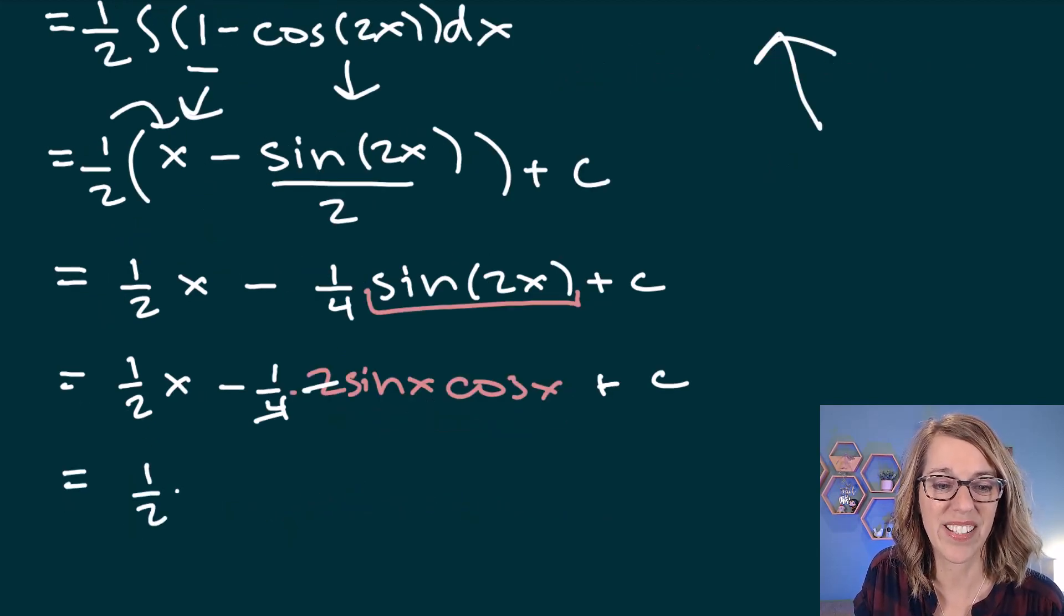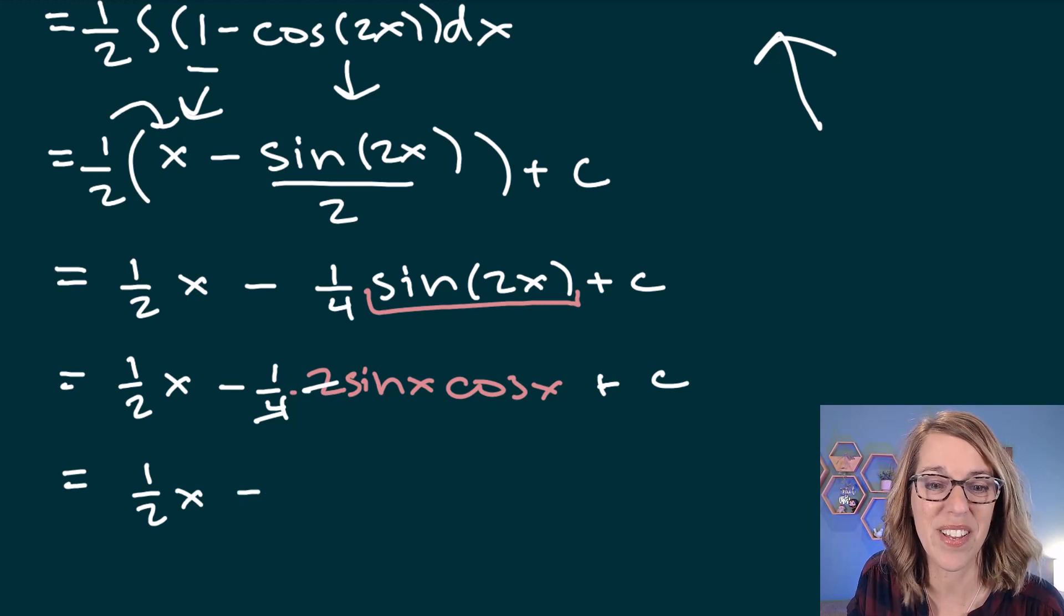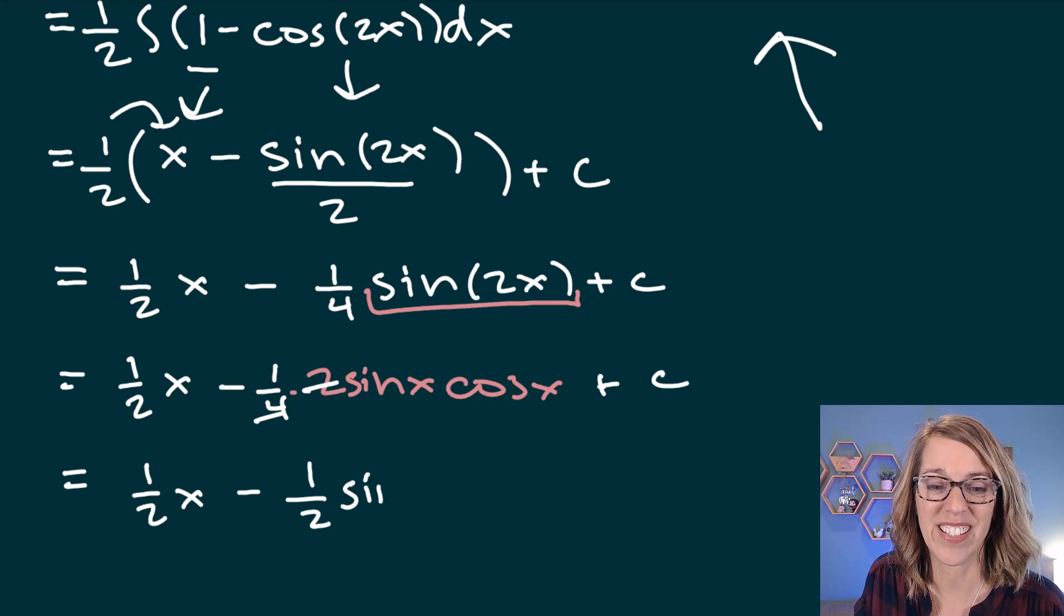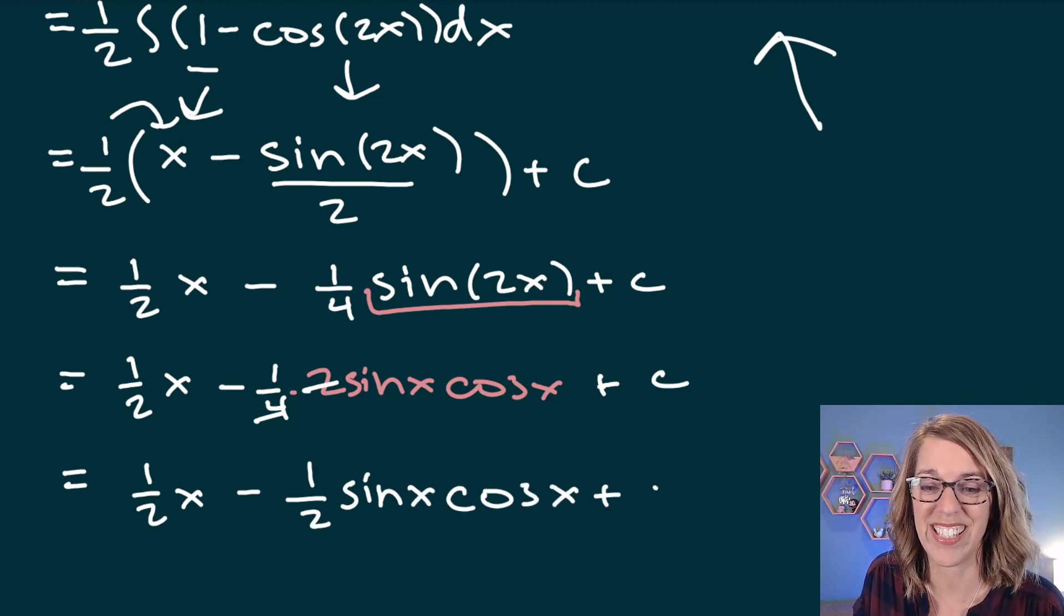And we can cancel those. This is going to make our final answer 1 half x. This is just another version of it. Minus, canceling the 2 and the 4, I get another 1 half. And then sine x cosine x plus c.